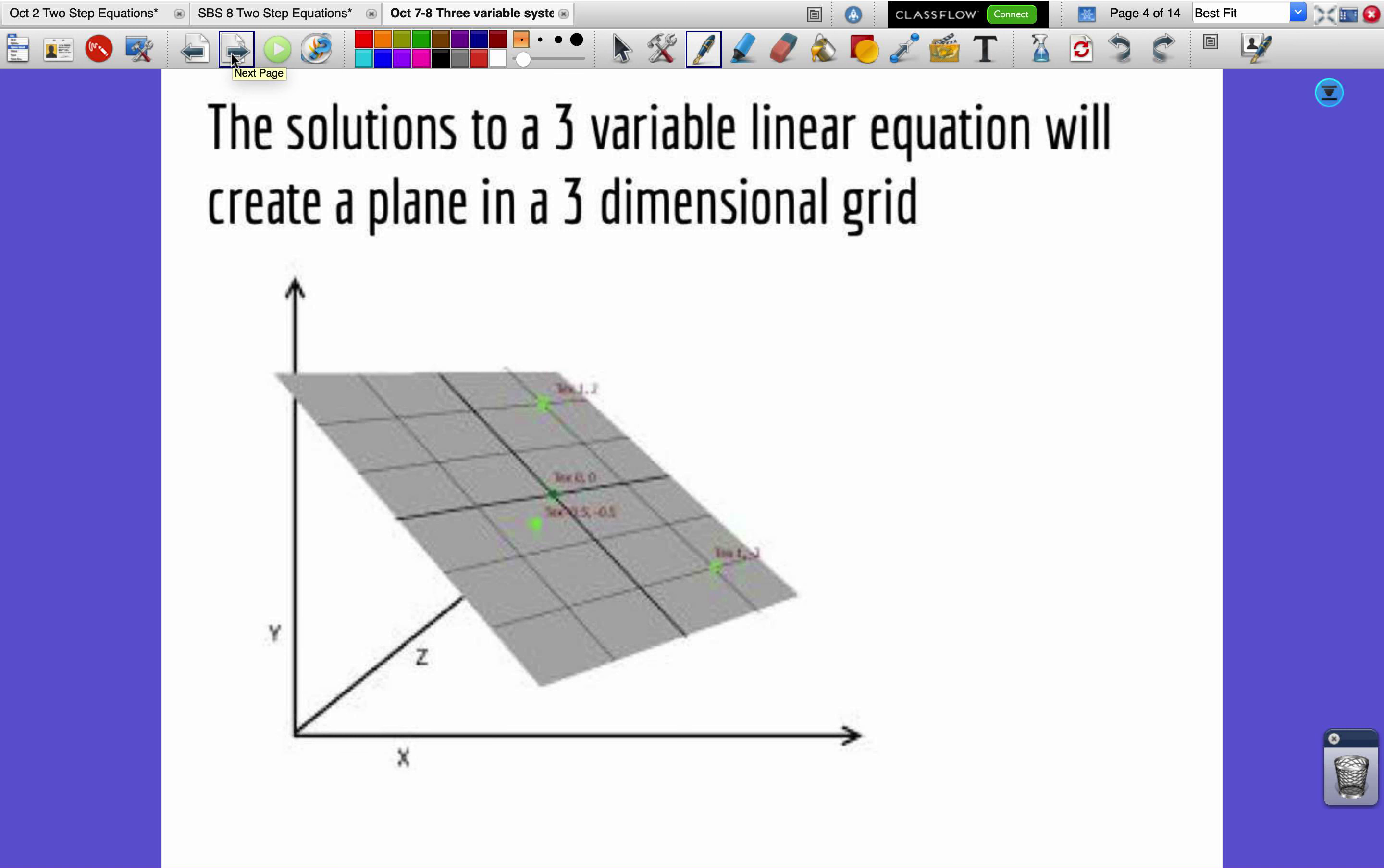Now, when we have a three variable equation, the solutions to that three variable equation will create a plane in a three-dimensional grid, much like how the solutions to a two-variable equation create a line in a two-dimensional grid. So on this plane are all of these ordered pairs of an x, a y, and a z that make some equation, you know, 2x plus 3y plus 4z equals 5, something like this. And I'll make that true.